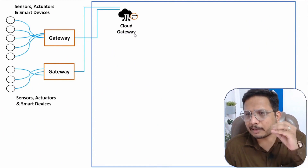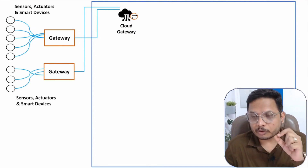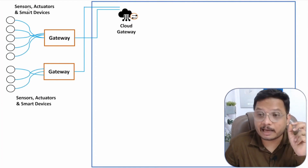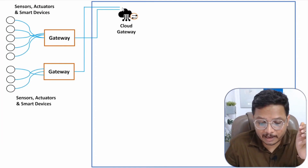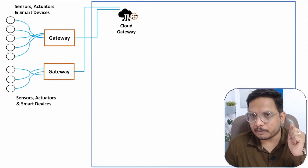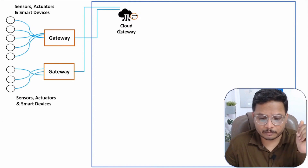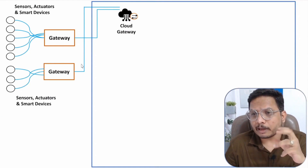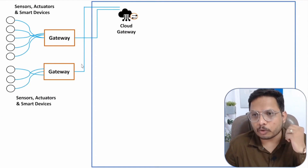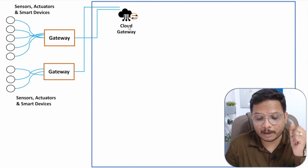The cloud gateway provides data compression, which is essential. Sensors will be sensing real-time data, so the size of the data will be very large. If you provide data compression, you will need less storage space, so the cloud gateway also provides data compression. Additionally, this cloud gateway can be easily connected to a variety of gateways, and different gateways may use different communication protocols. So compatibility is necessary here, and that compatibility will be provided by the cloud gateway.